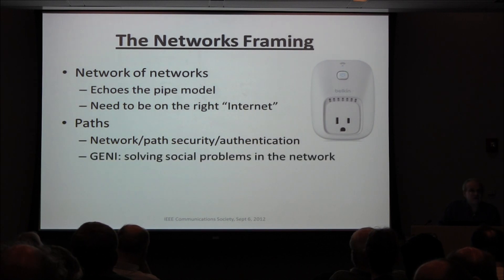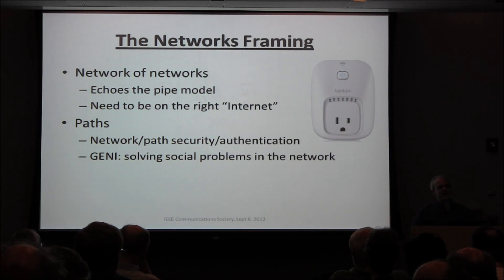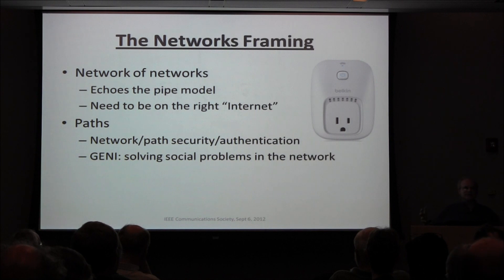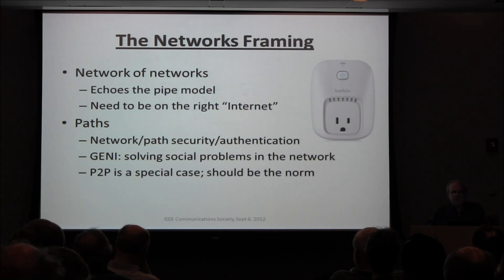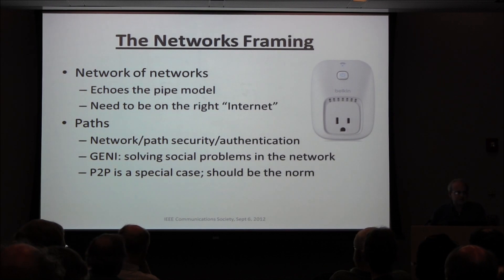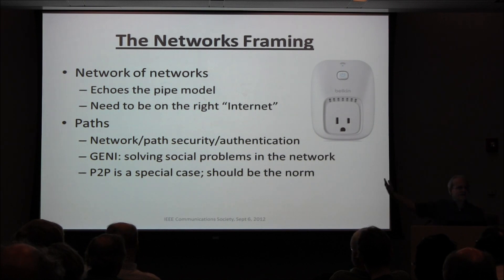Research is trying to solve these social problems inside the network — they want the network smarter, want to put security in the network, want to allocate resources in the network. They've got it upside down. You can fix problems in the network, but it's like dropping a key and searching under the lamppost where the light is, not where you dropped the key. Peer-to-peer should be the norm — all that matters is the relationship between the two endpoints. Yet we don't have standards for peer-to-peer; every peer-to-peer system is different. No wonder we don't have connected medical devices or connected fire alarms.